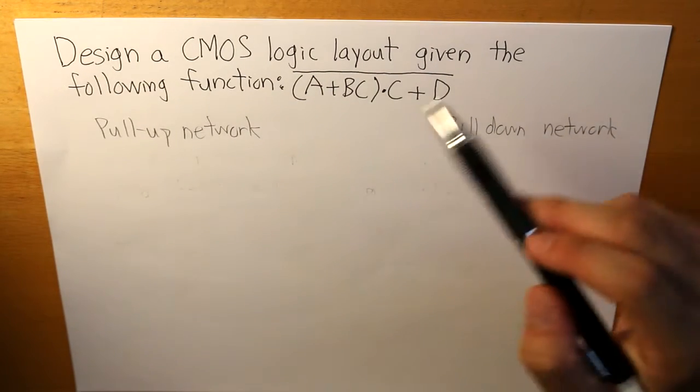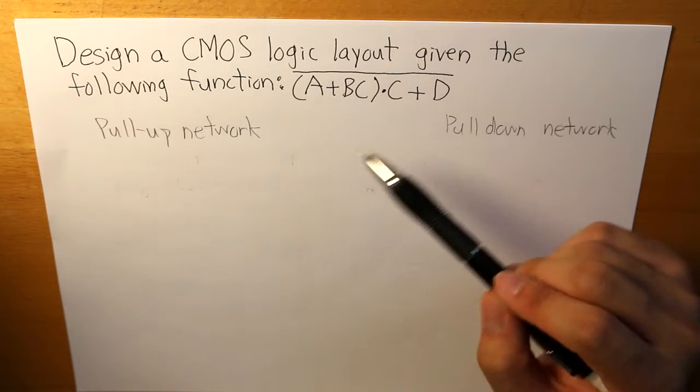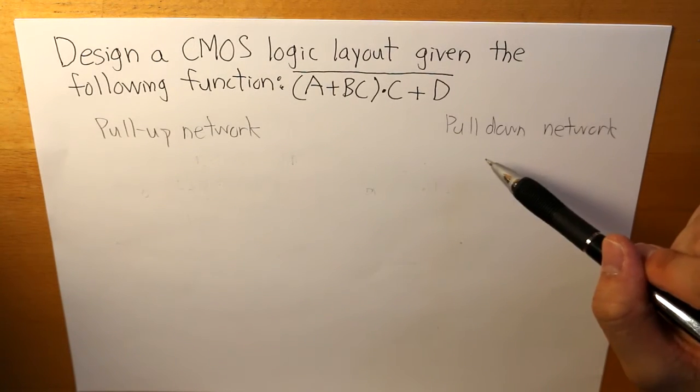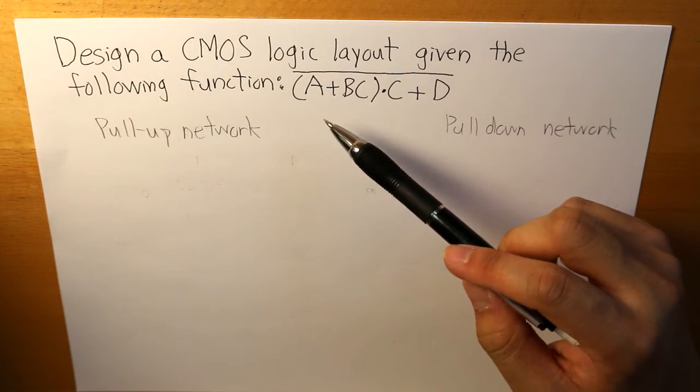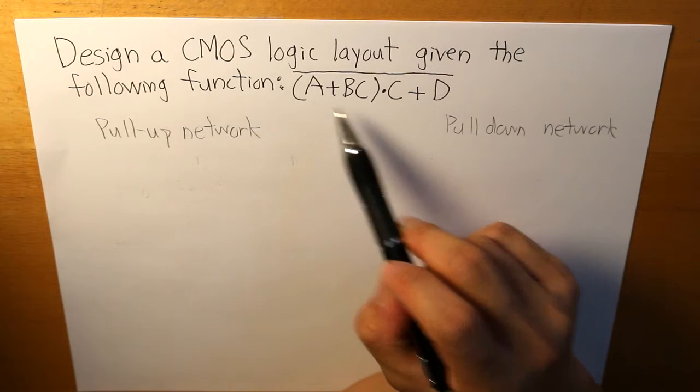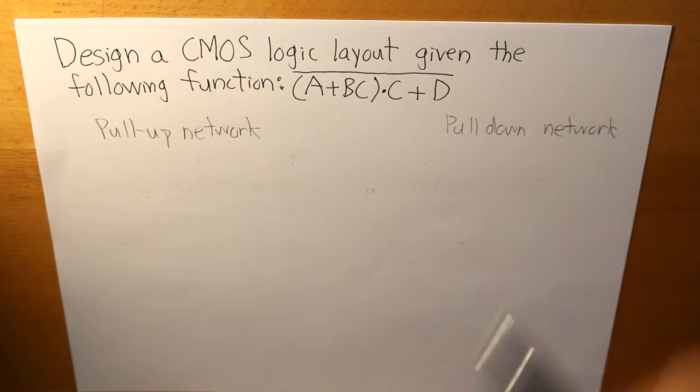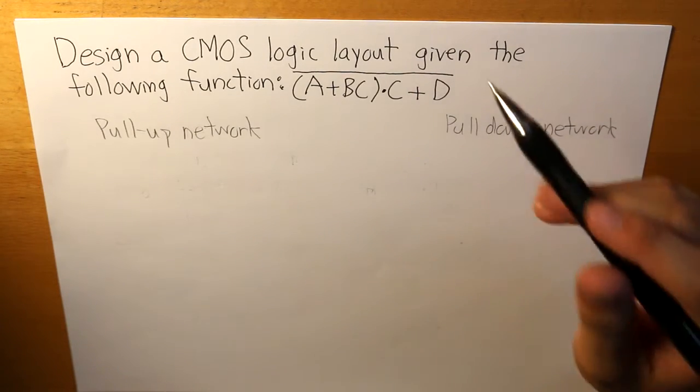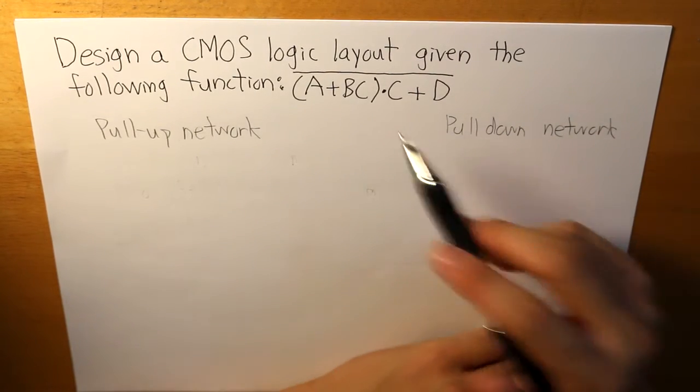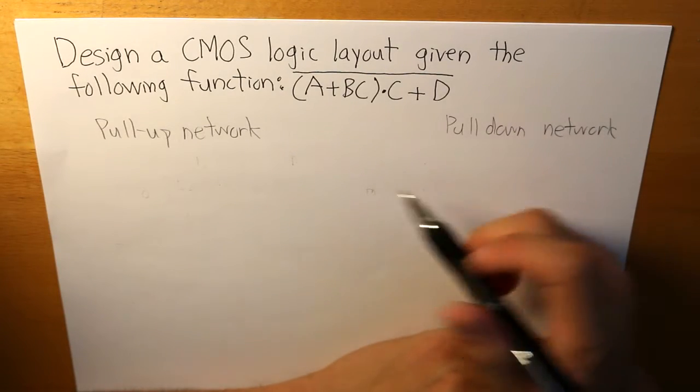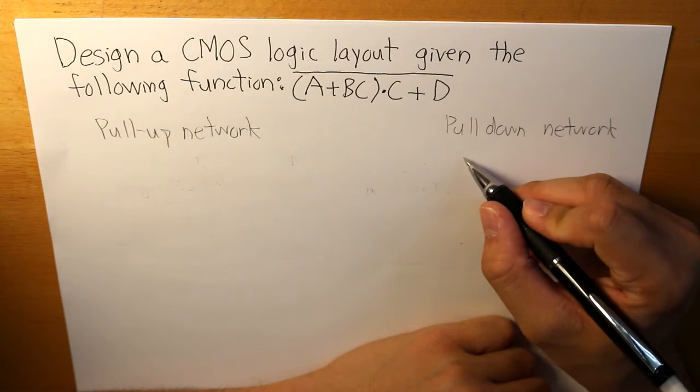And each network basically represents what our function is. Let's start off with the pulldown network. So the pulldown network represents the inputs of these in an NMOS transistor.